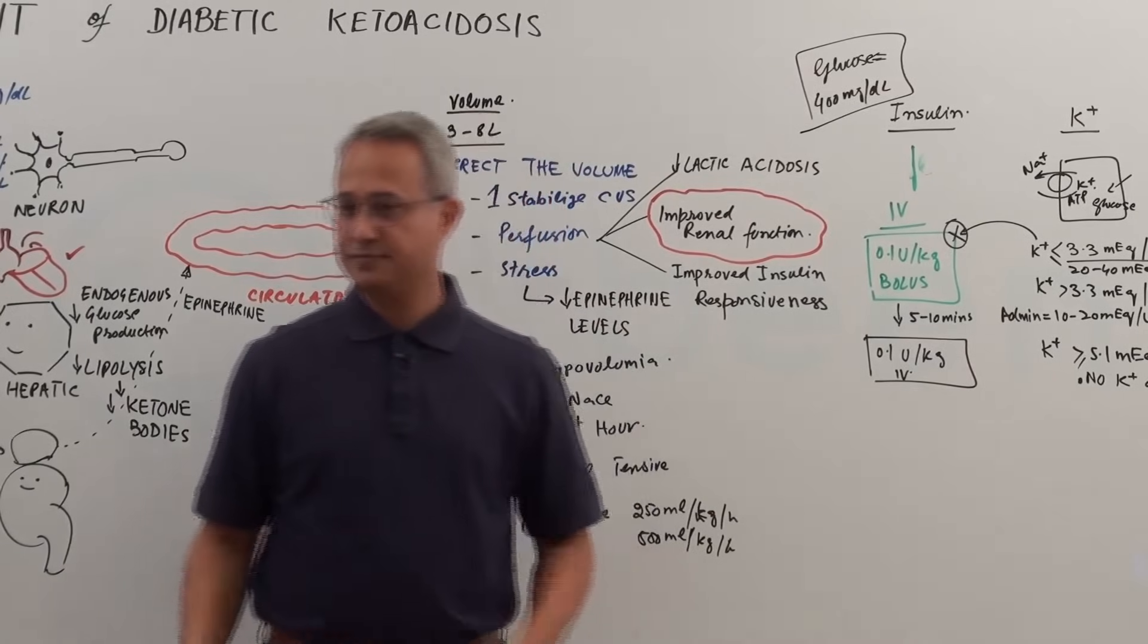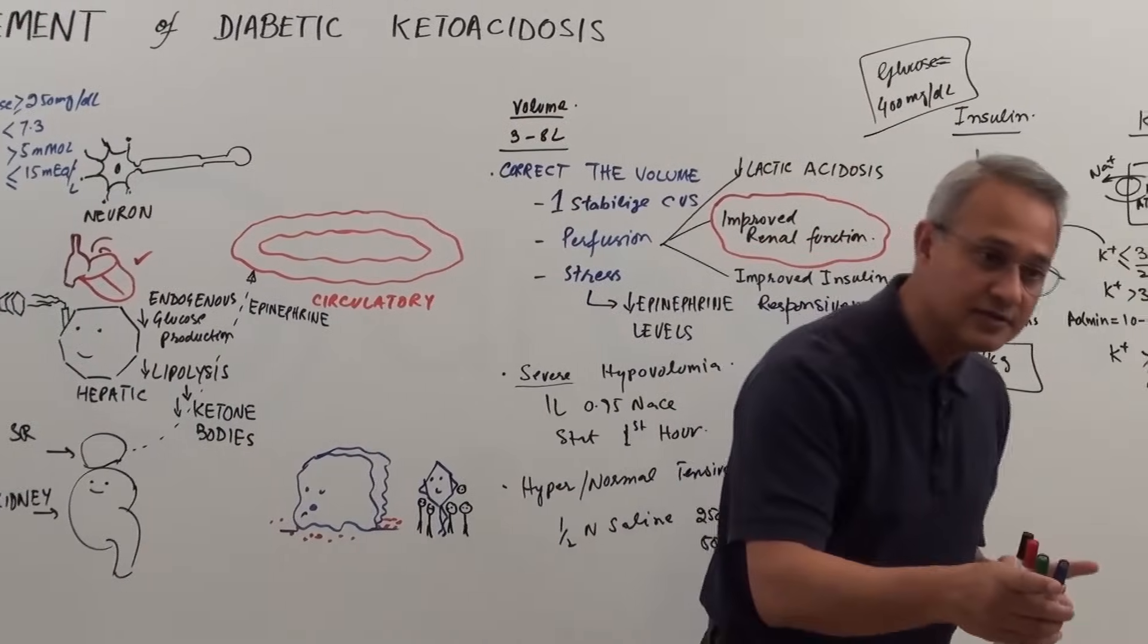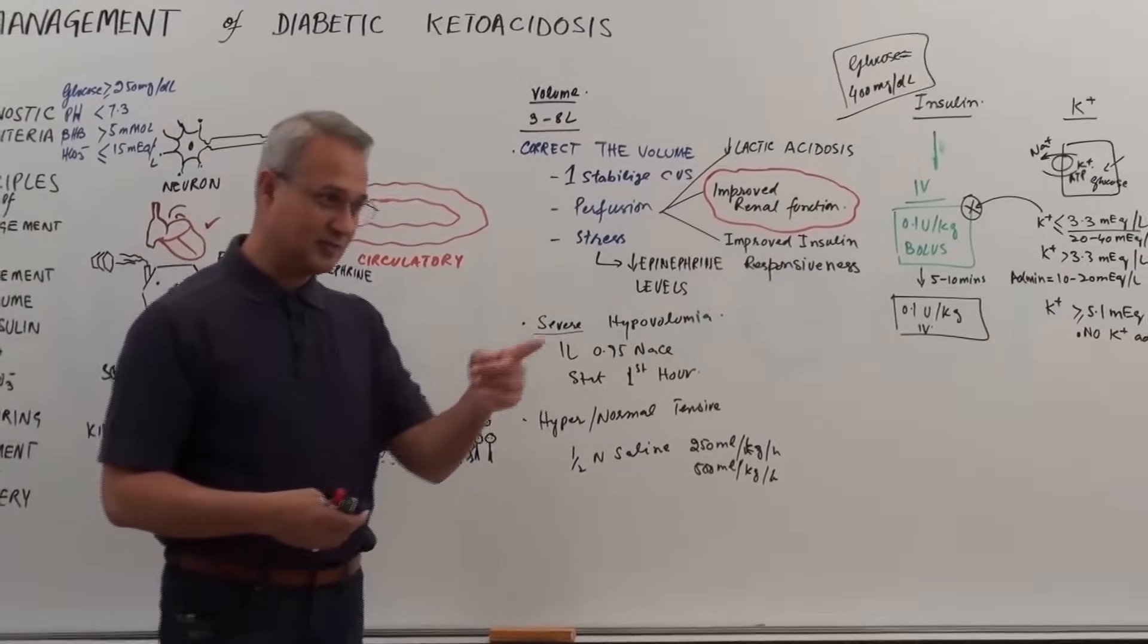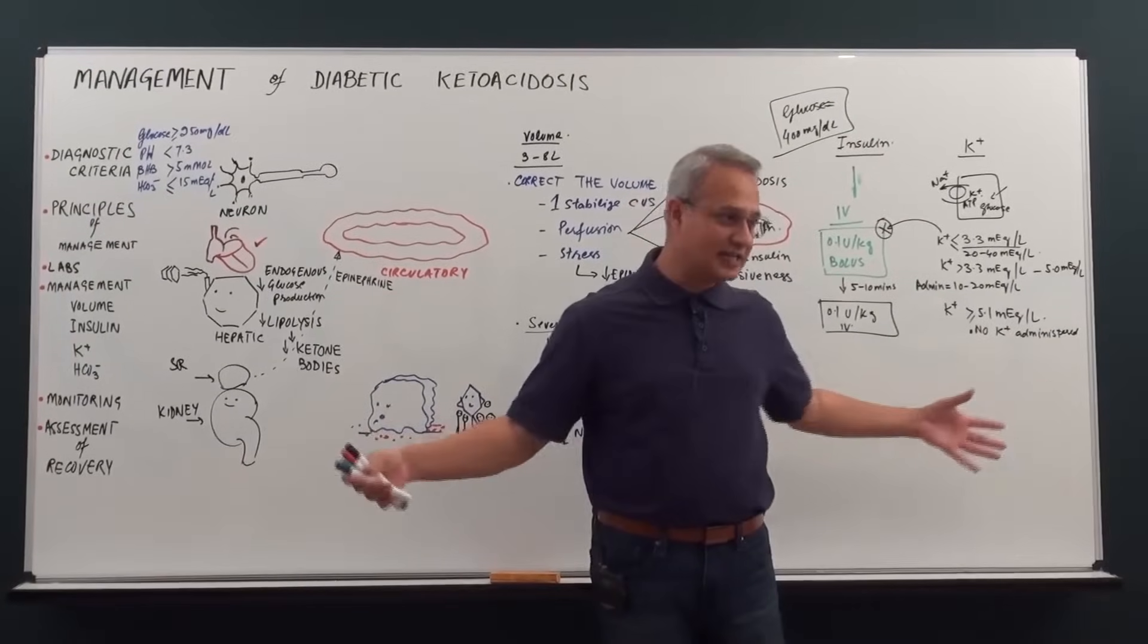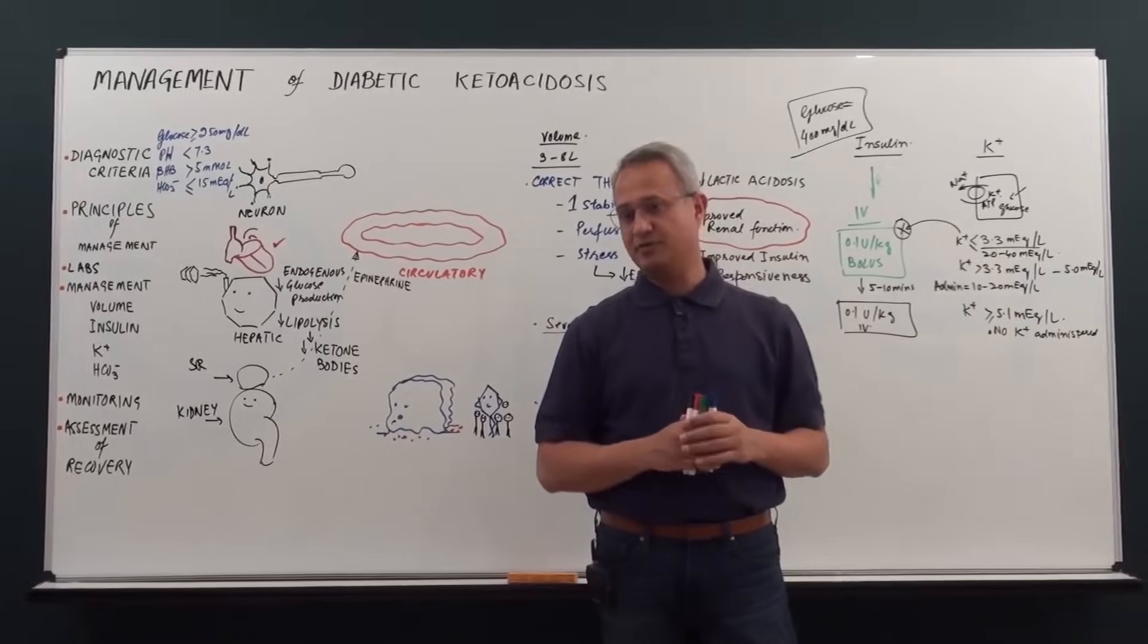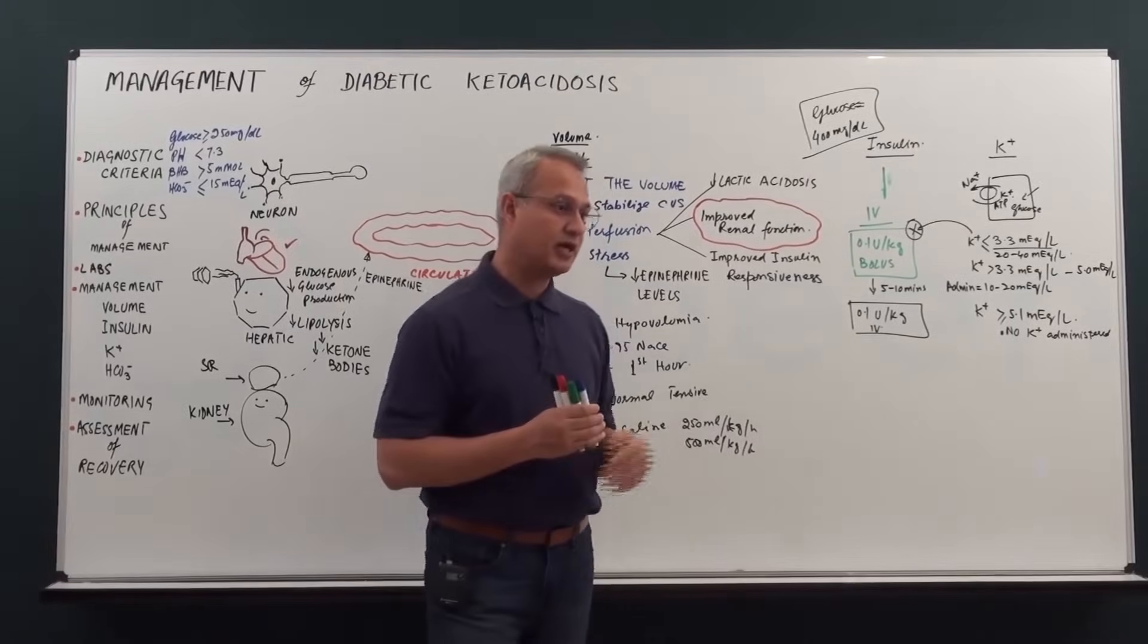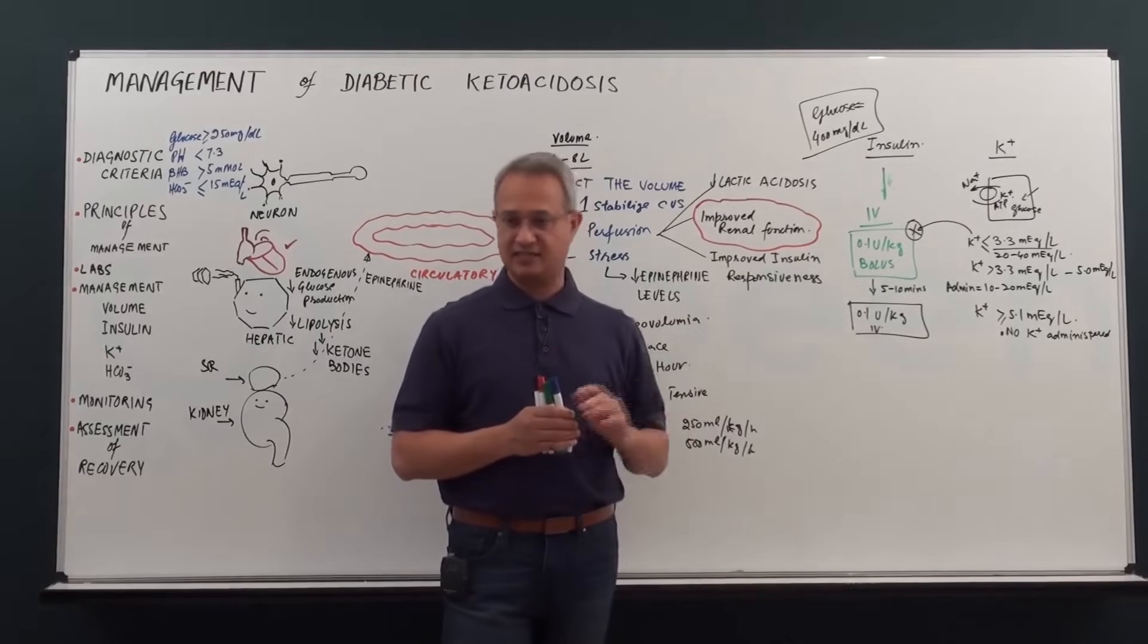When you start giving insulin and you're measuring glucose, what do you intend there? What is your principle of therapy there? Glucose will drop for two reasons. What are the two reasons? Insulin is one. Second? Fluids. So as you give fluids, you expand the volume. Glucose will become relatively diluted. So osmolality would drop.